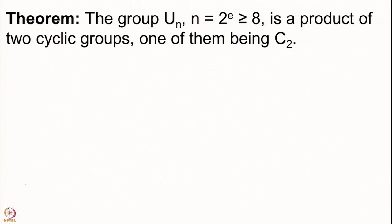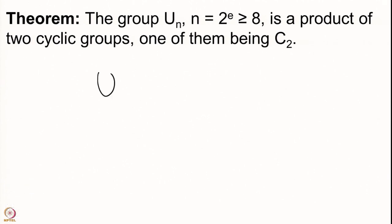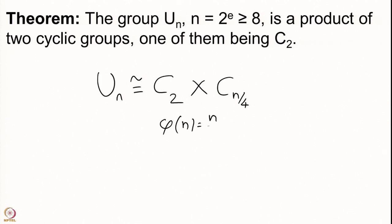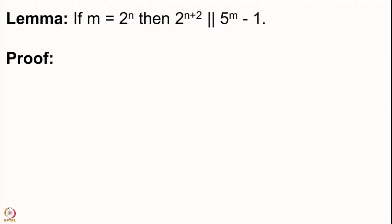U(n) is isomorphic to C₂ × C_{n/4}. Remember that since n is a power of 2, φ(n) = n/2, which is the same as 2·(n/4). Since n ≥ 8, n/4 is an integer — that is not a problem. As I said, we will have to do one small lemma here.